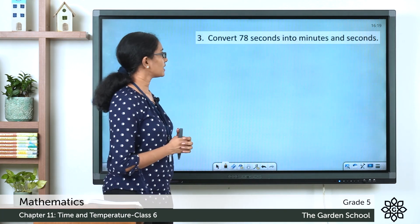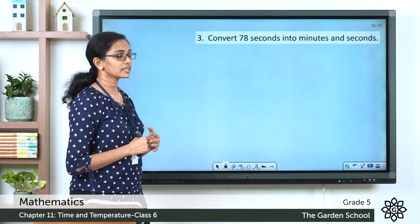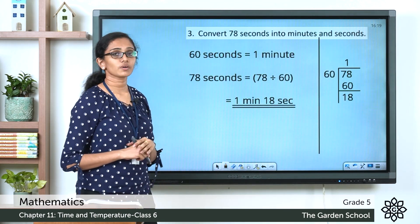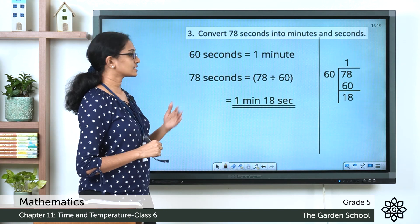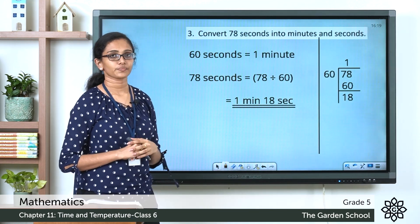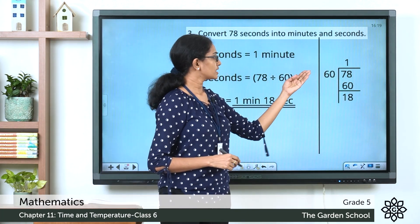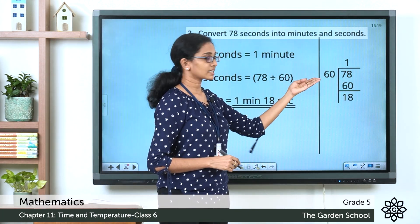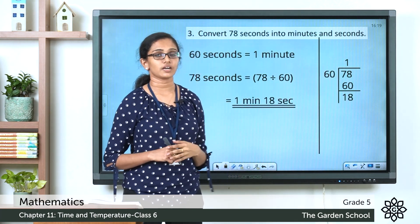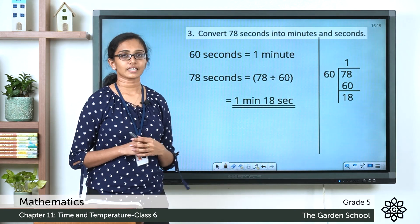Convert 78 seconds into minutes and seconds. We know 60 seconds equals 1 minute. So 78 divided by 60 gives 1 minute with 18 seconds remaining. The equivalent is 1 minute 18 seconds.